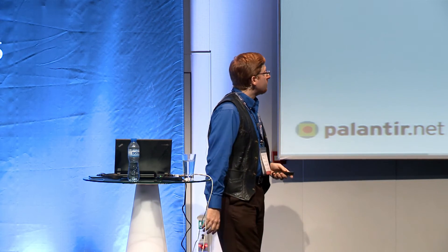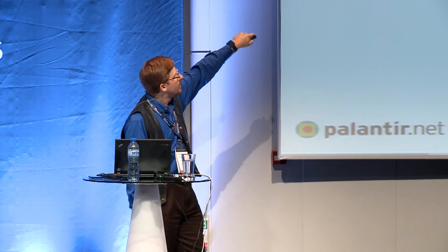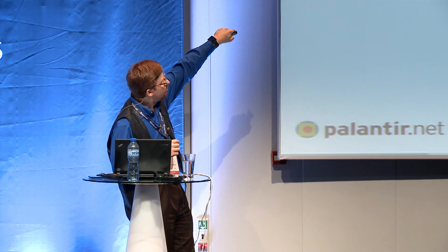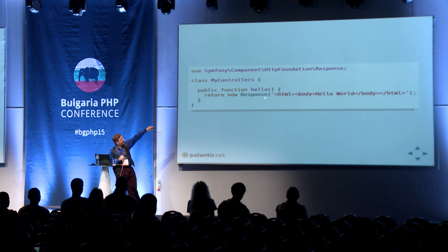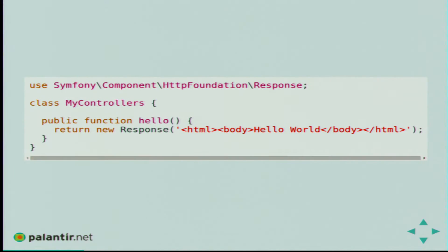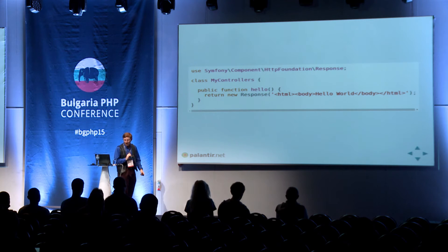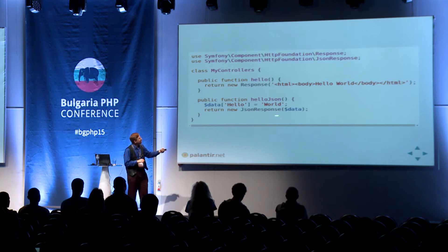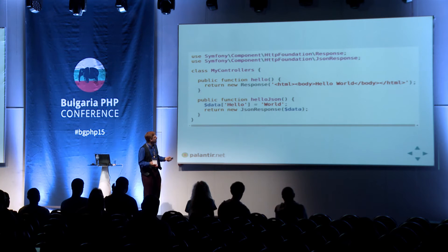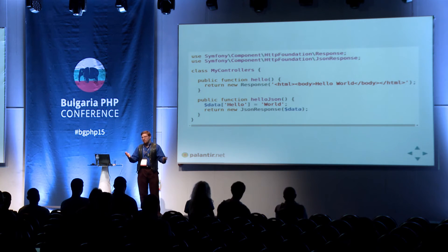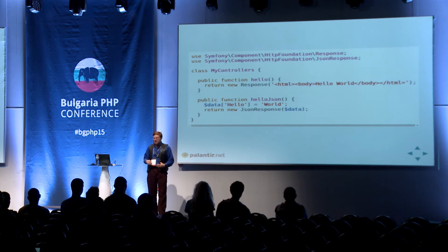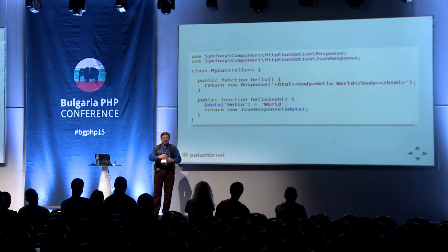Controllers can be as simple as this. We've got a class called MyControllers, we've got a method called Hello, and we send back a response — this is the entire HTML response going back. Important: in Drupal parlance, this is a controller — not the class, the method is the controller. The callable is the controller. You can put multiple controllers in the same class. We're also going to add a HelloJSON method controller, and instead of returning a response, we return a JSON response — a subclass of response that we pass an associative array to. It will JSONify it, set the correct headers, set the correct content length, all the various HTTP stuff — all wrapped up into that class. Nice and simple.